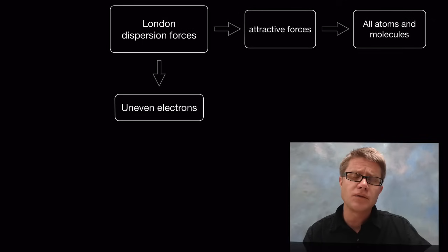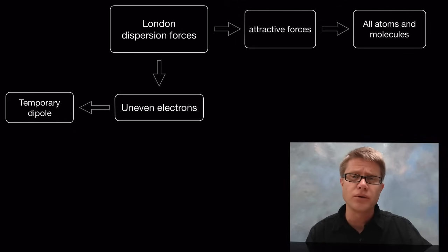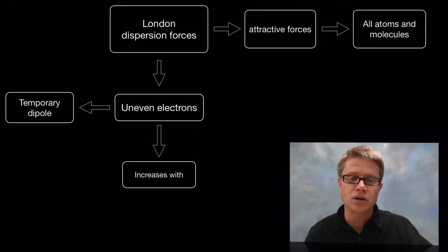What really develops them are uneven electrons. As the electrons are distributed unevenly they create what are called a temporary dipole. Those are going to be a molecule that has a charge. It has a positive and a negative charge.